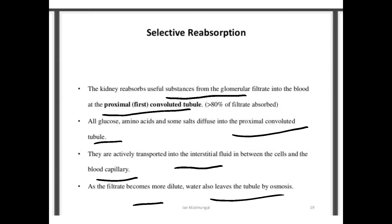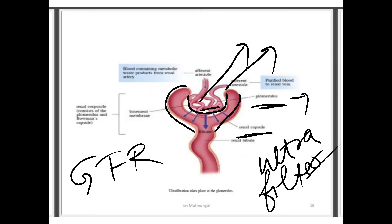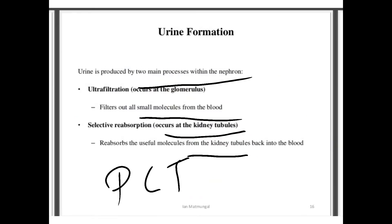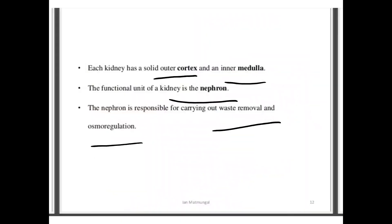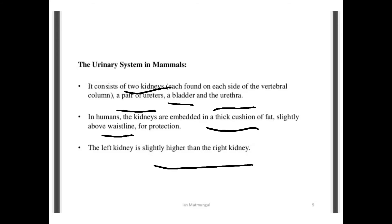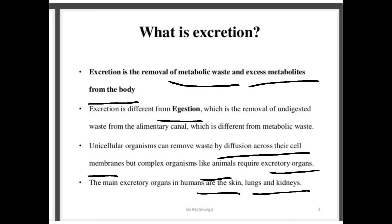So this covers the excretory system and how urine formation occurs. I hope you all understand what excretion is, the diagram of the excretory system, what is present in the kidney — the nephron — and the diagram for nephron and urine formation. Thank you so much.